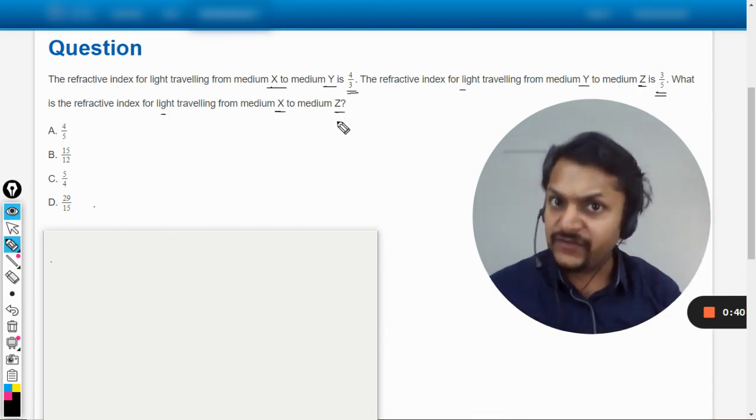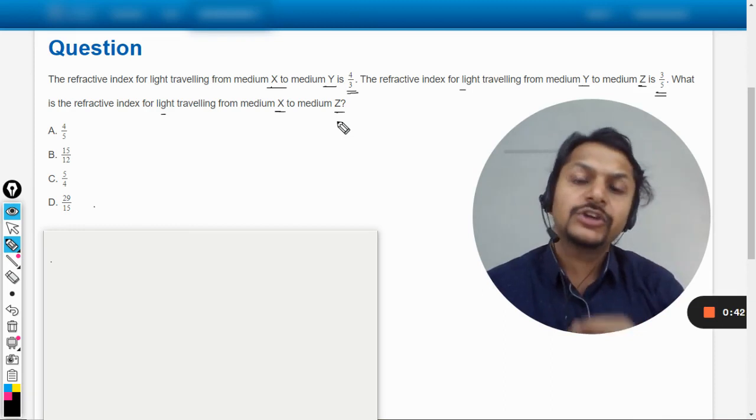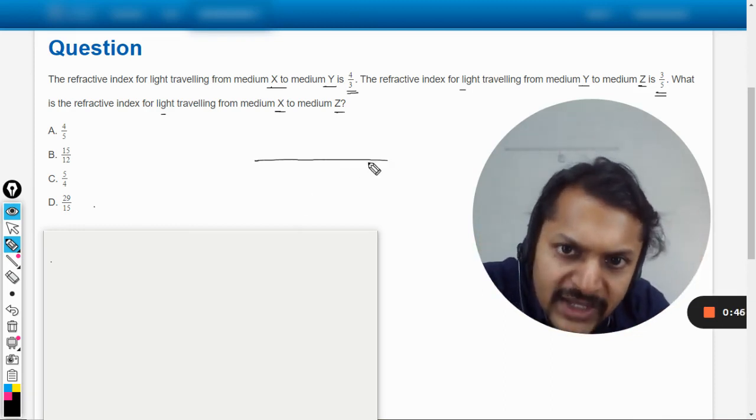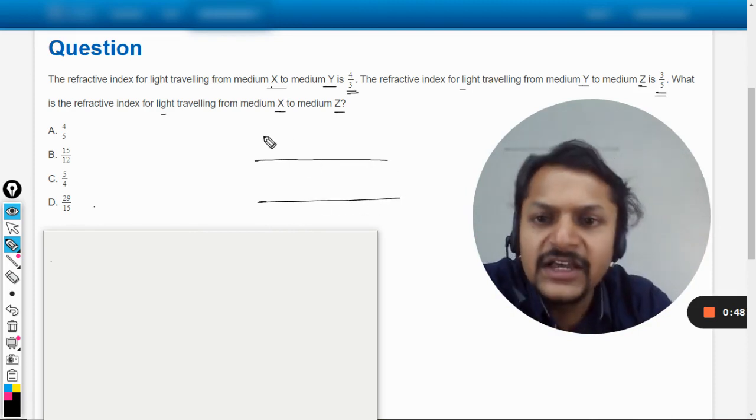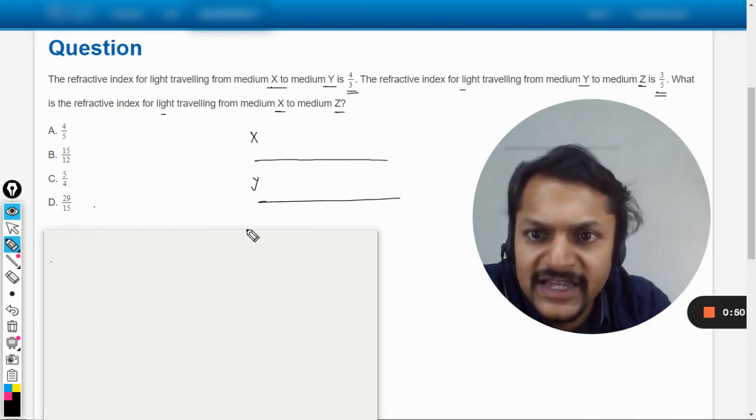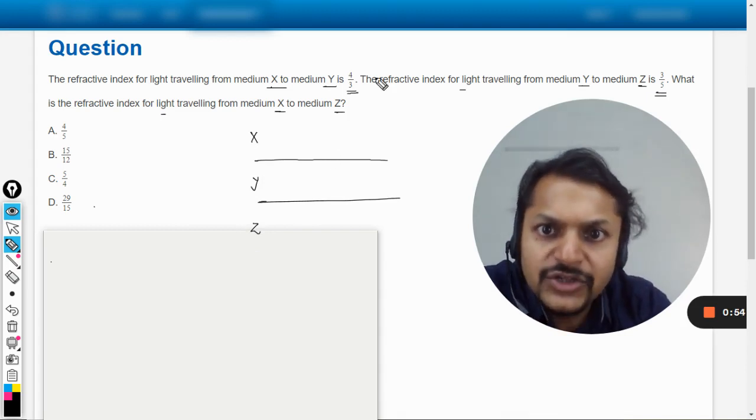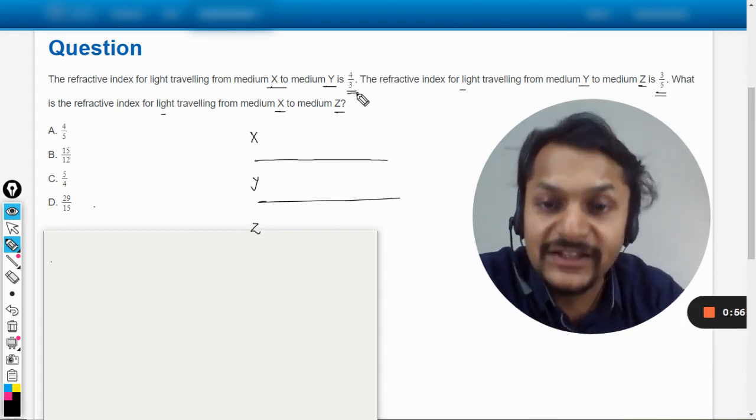So this question is more about the refractive indices only, it's not about Snell's law. Let us now see. There are three mediums, so I can just draw these mediums like this. Let me call this medium as X, this as Y, and this as Z. When the light is coming here, the refractive index is becoming denser.